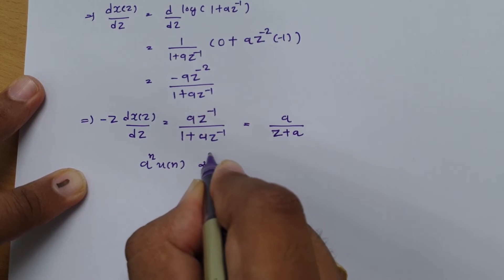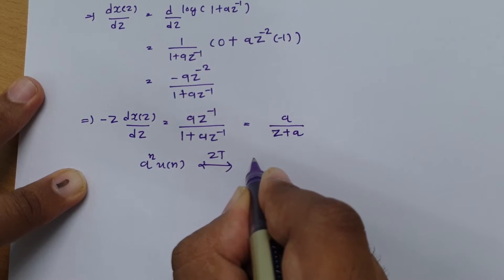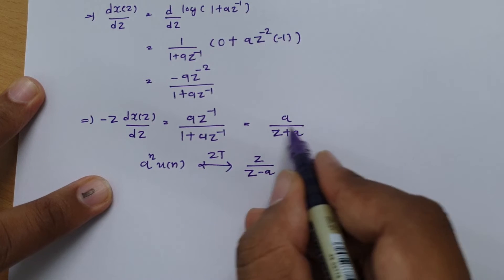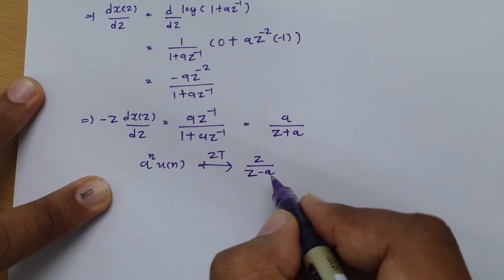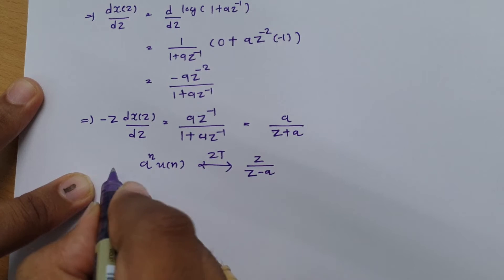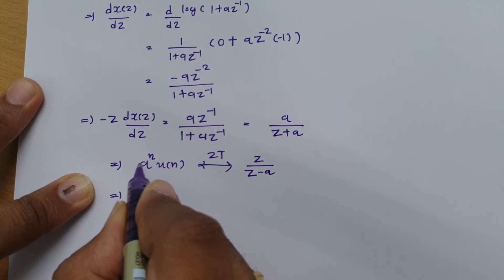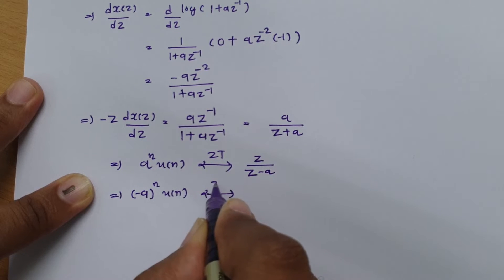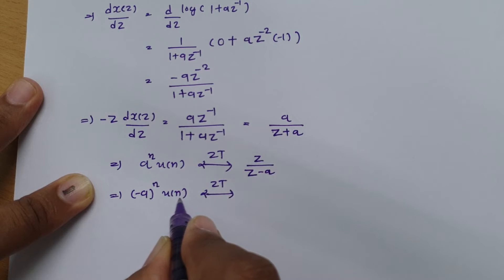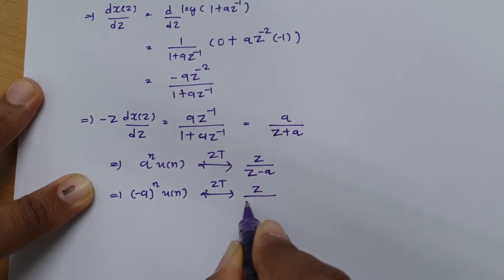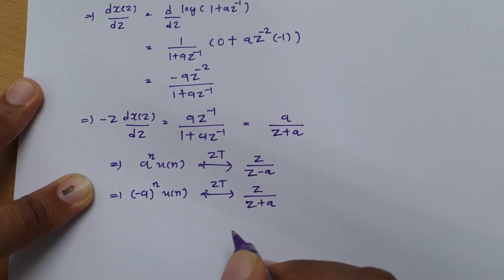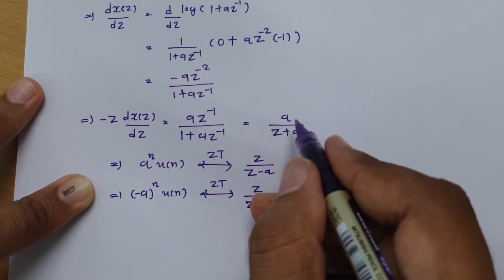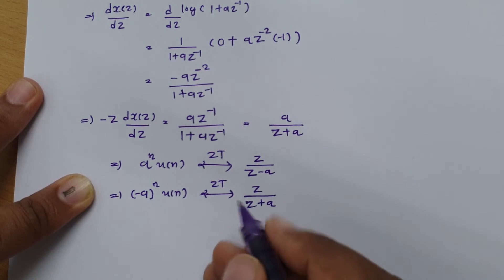The Z-transform of A^n·u(n) is Z/(Z - A). But in our expression we have Z + A in the denominator, not Z - A. So we substitute -A in place of A, giving: (-A)^n·u(n) ↔ Z/(Z + A). However, our expression has A/(Z + A), which has no Z in the numerator, so we use the time-shifting property.